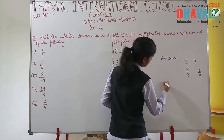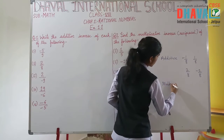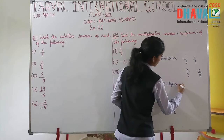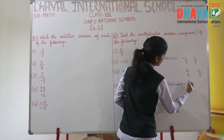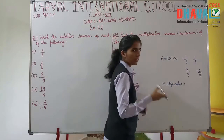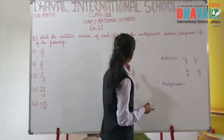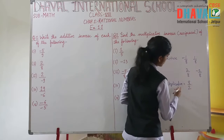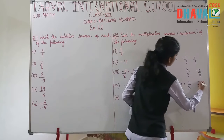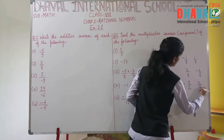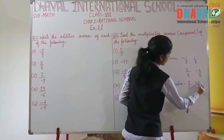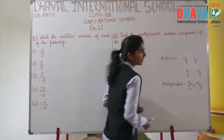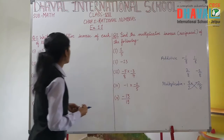And for the multiplicative inverse, you will turn around the numbers — that is, flip the fraction. For example, if the number is 8 upon 2, then its multiplicative inverse will be 2 upon 8. This number goes there and that number comes here.